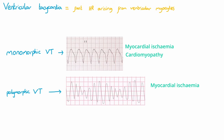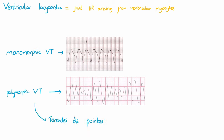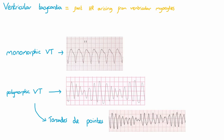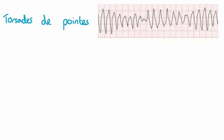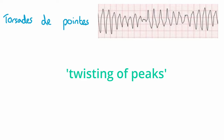Where VT is present for prolonged periods of time, there's a serious risk of degeneration into ventricular fibrillation and then cardiac arrest. A specific form of polymorphic VT that you should be able to recognize is torsades de pointes. This usually develops due to a prolonged QT interval. It has this characteristic shape, where the complexes appear to twist around the isoelectric line. Translated from French, torsades de pointes literally means twisting of peaks. This is very serious and can also quickly lead to ventricular fibrillation and cardiac arrest.